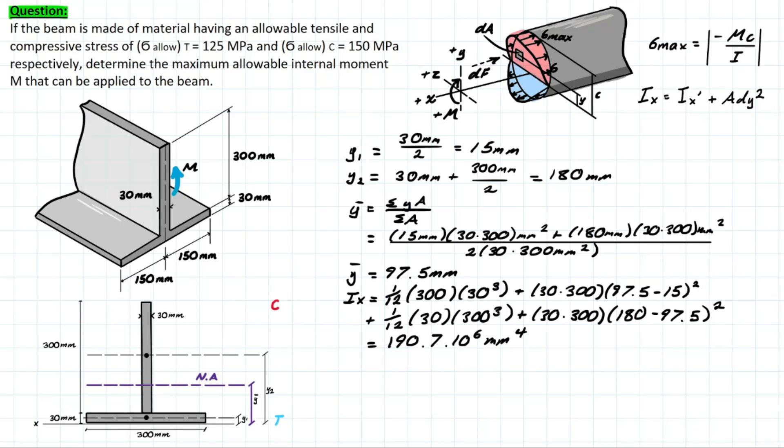Now the important part of this problem is we have two allowable stresses for the compressive and the tensile fibers of this member. If we know that the compressive is limited by 150 MPa, then we know that this is going to be for the top fiber based on our moment convention. So the c value that's going to be used in this formula is going to be from the neutral axis to the furthest point on this fiber. We're going to be taking this distance from here to here. Let's see what that looks like in the formula.